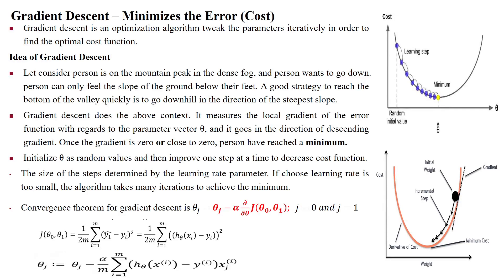Welcome to Gradient Descent, which is useful to minimize the cost in linear regression. Gradient Descent is an optimization algorithm to change the parameters iteratively in order to find the best optimal cost function.